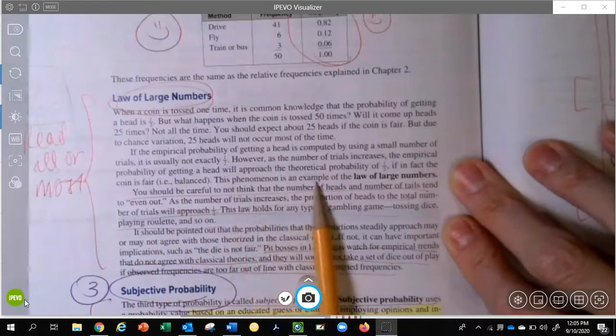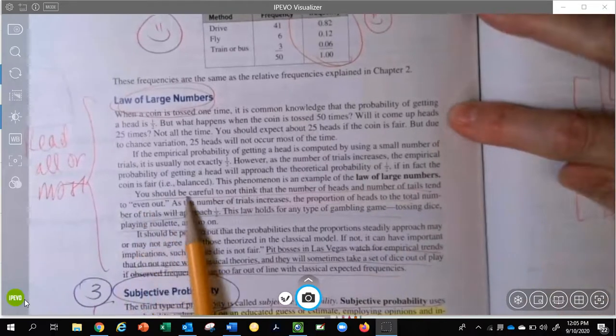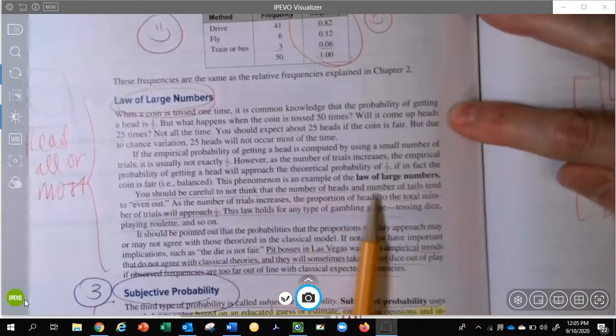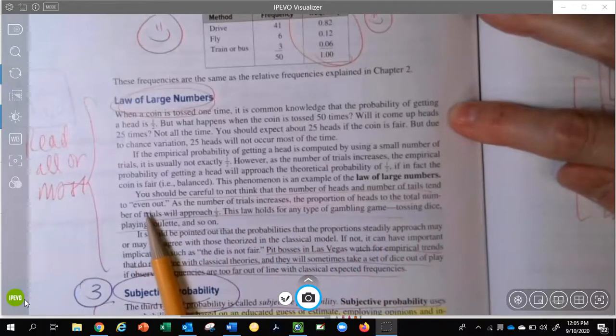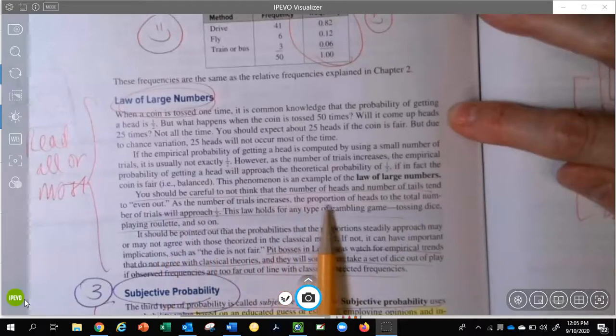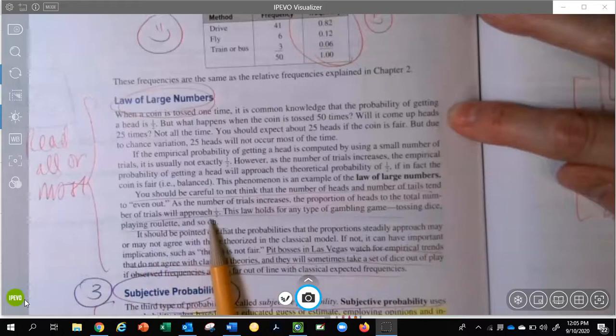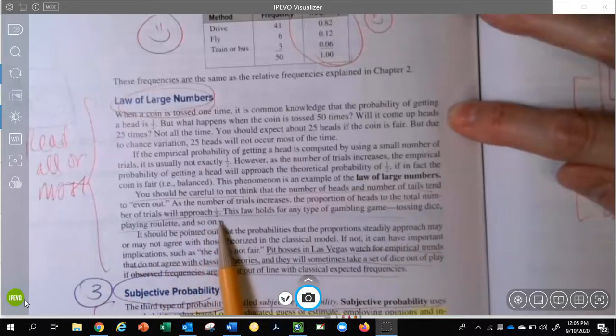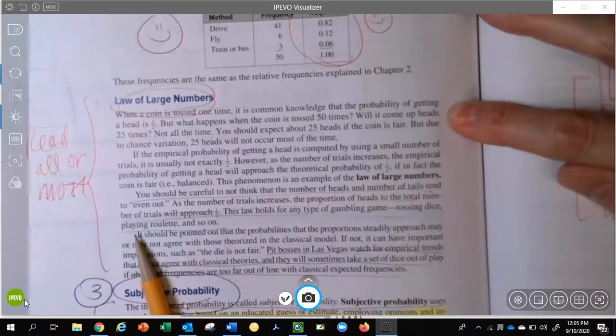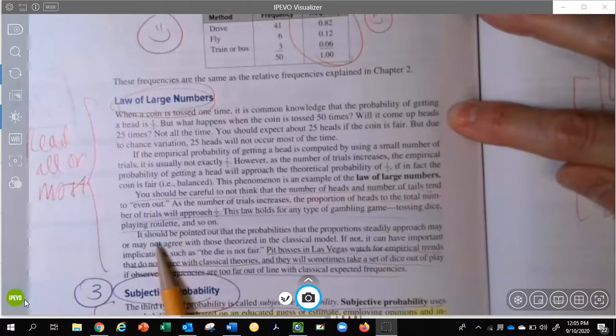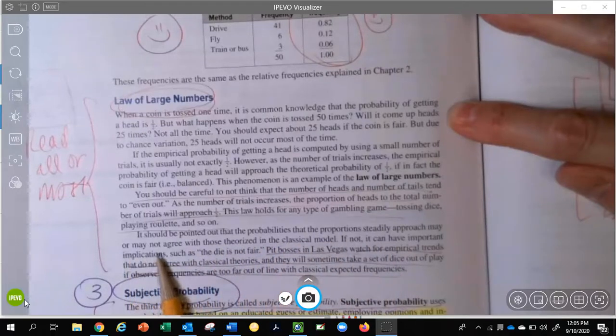The phenomenon is called the law of large numbers. You should be careful to not think that the number of heads and the number of tails tend to even out. As the number of trials increases, the proportion of heads to the total number of trials will approach one-half. And this law holds true for any type of gambling game, tossing dice, playing roulette, and so on.